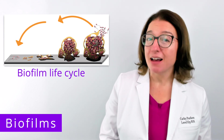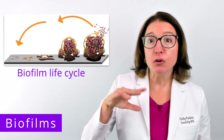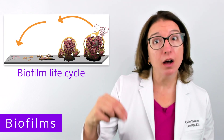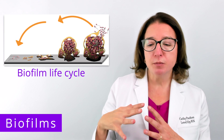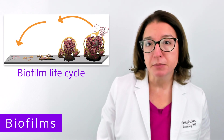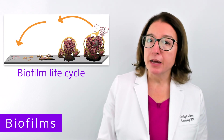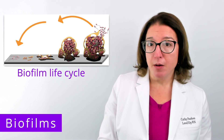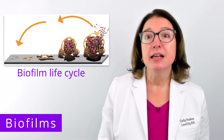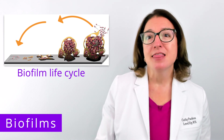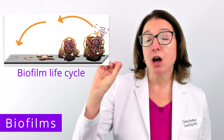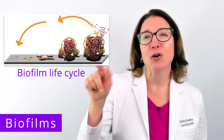Biofilms form when planktonic cells, which are free-floating microbes, attach to a surface and become sessile, or unable to move freely. These microbes then grow and divide and produce an extracellular polymeric substance. As the biofilm matures, water channels develop, which allows for the transport of nutrients and the removal of waste products. Cells along the edge of the biofilm can then slough off to colonize new sites, starting the process all over again.